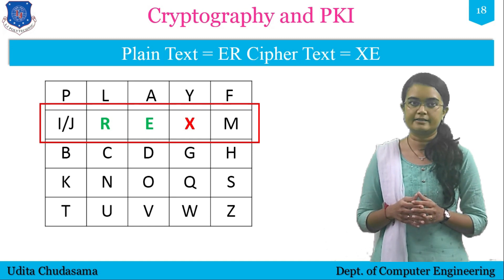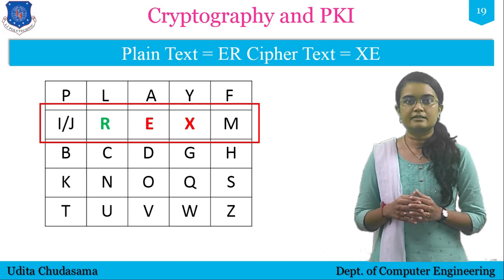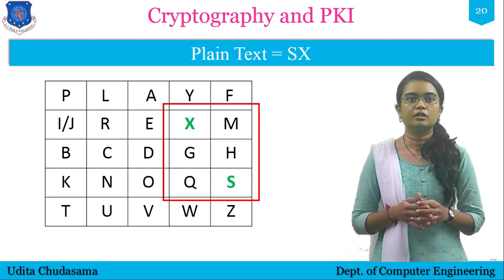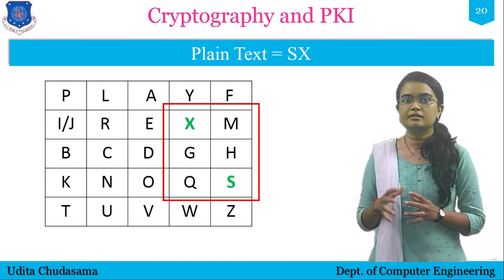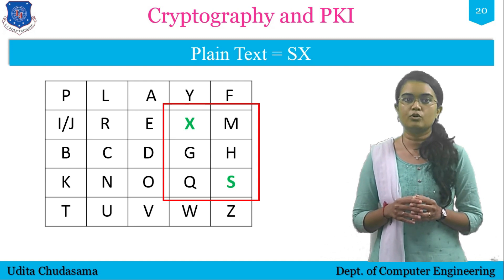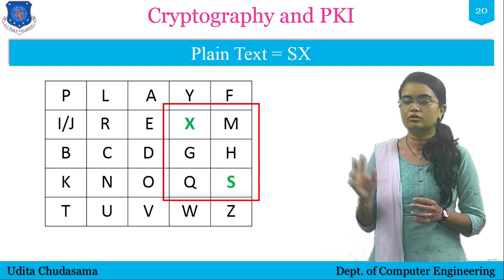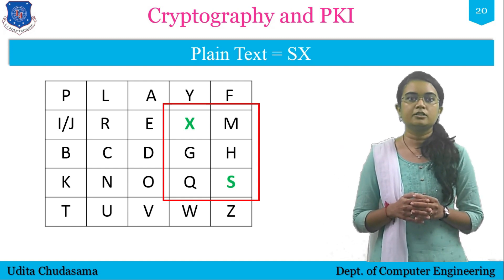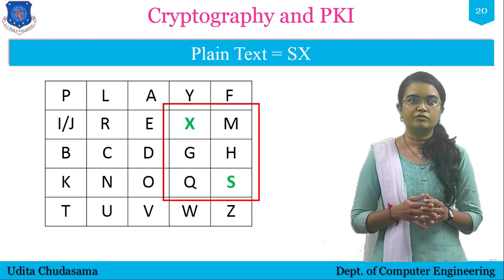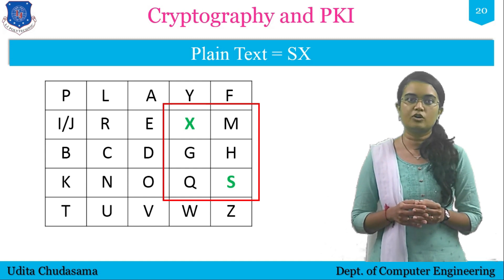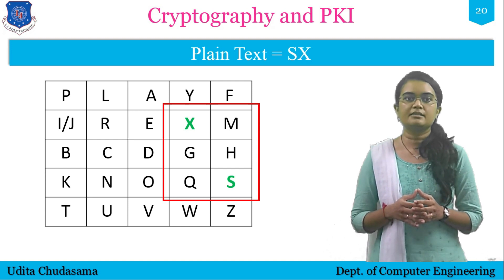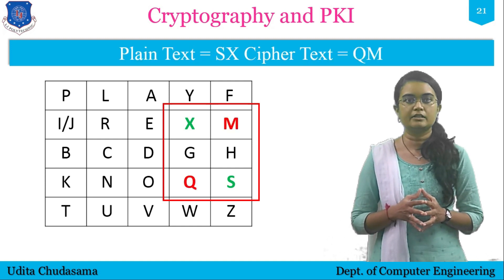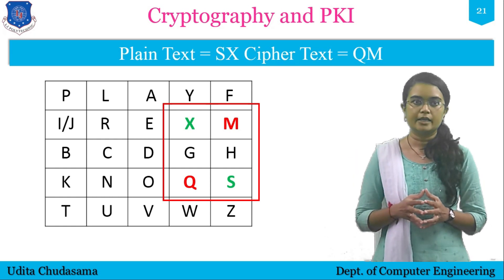The last pair is SX. We locate S and X in the matrix and form a rectangle. Encrypting S: we find the letter in the same row of S at the other corner of the rectangle, giving Q as cipher text for S. For X: we find the letter in the same row of X at the other corner, giving M as cipher text for X. So the pair SX encrypts as QM.